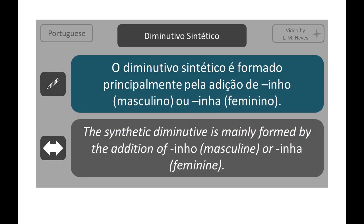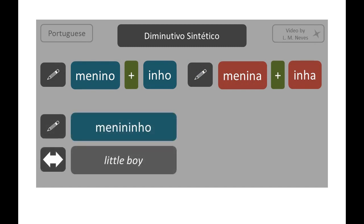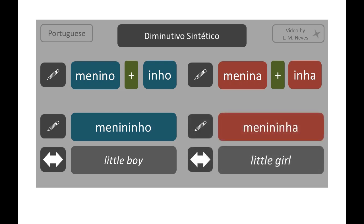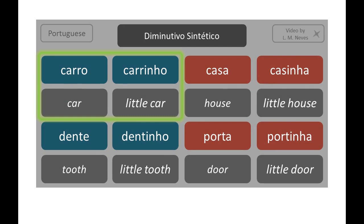Let's see more about the diminutivo sintético. It's mainly formed by the addition of -inho (masculine) or -inha (feminine). For example: menino + inho = menininho; menina + inha = menininha. More examples: carro → carrinho; dente → dentinho; casa → casinha; porta → portinha.